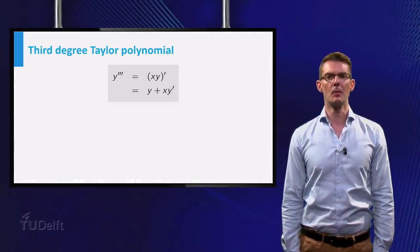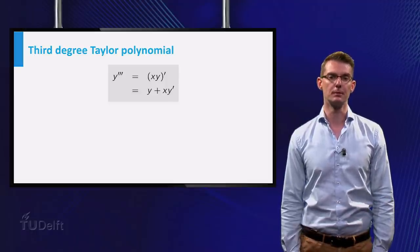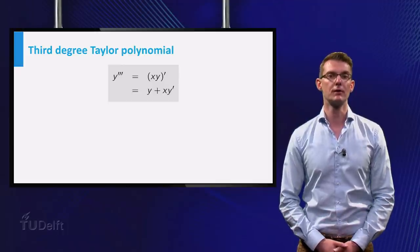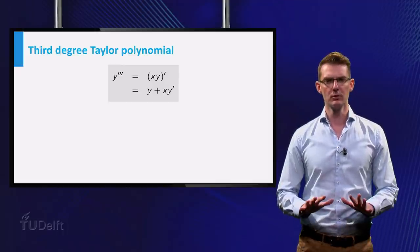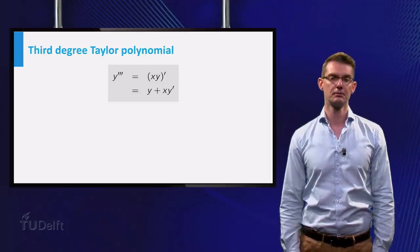Now at first sight, you might think that it is not possible to construct a Taylor approximation of degree 3. The differential equation only gives us information about the second derivative of f of x. However, there is a way to compute the third derivative. Now how can we do that?